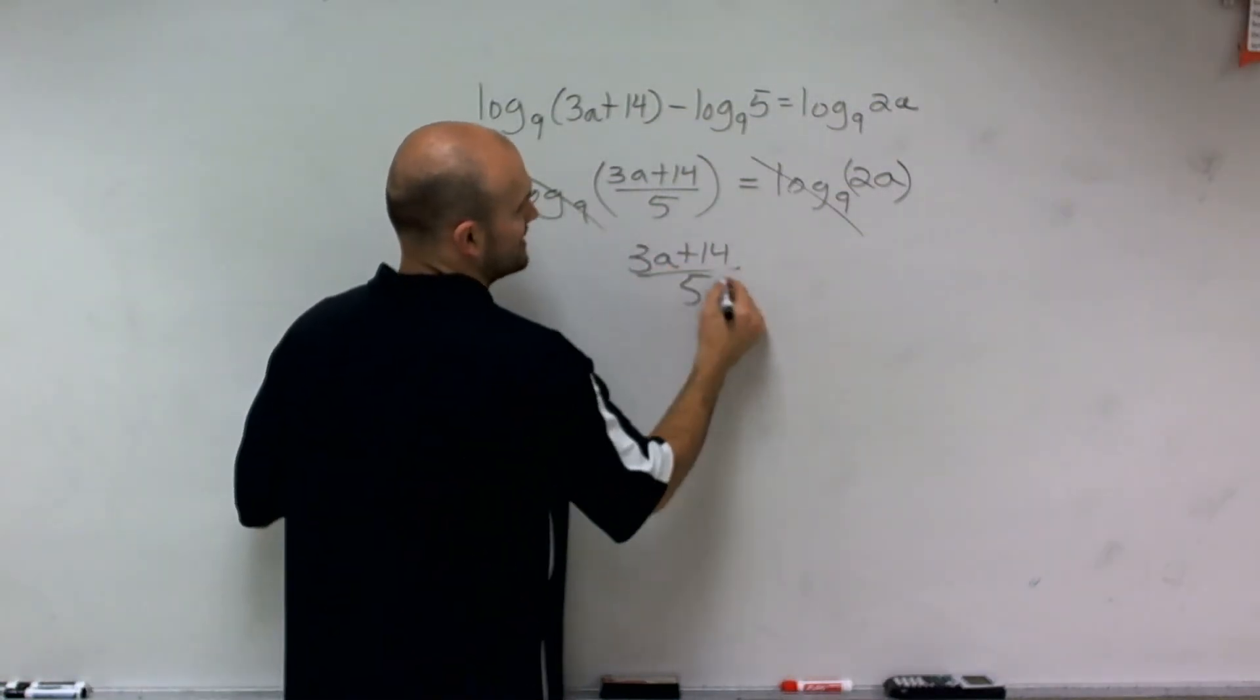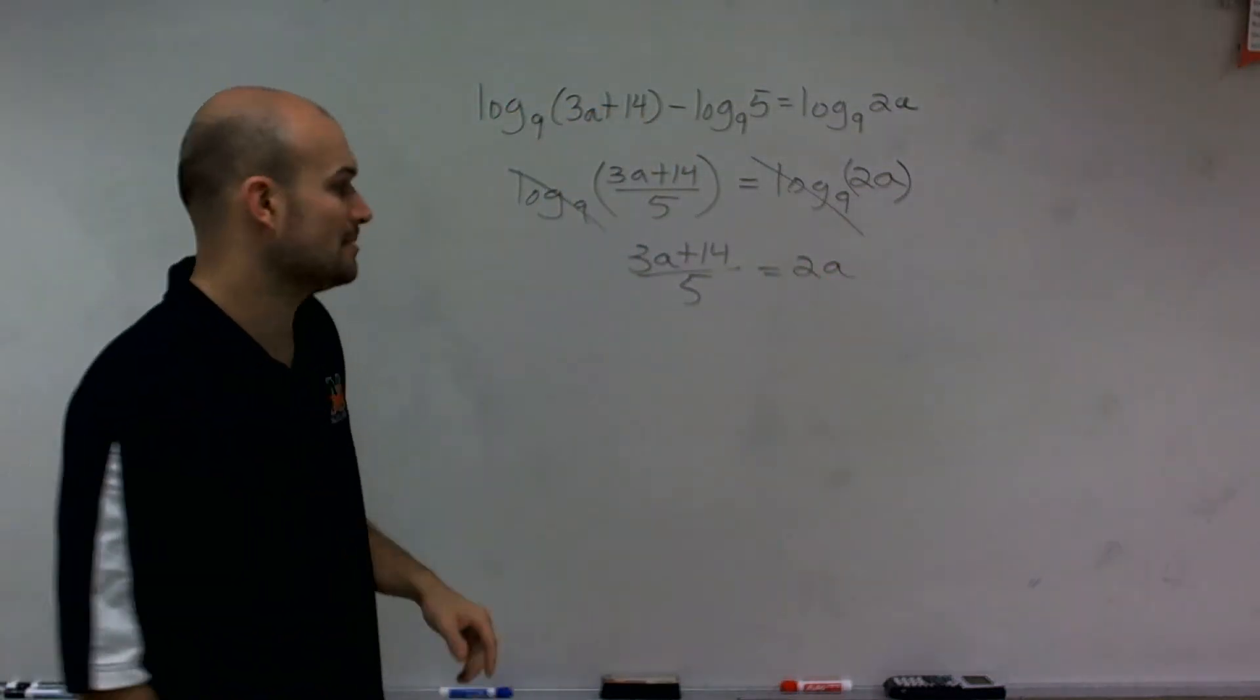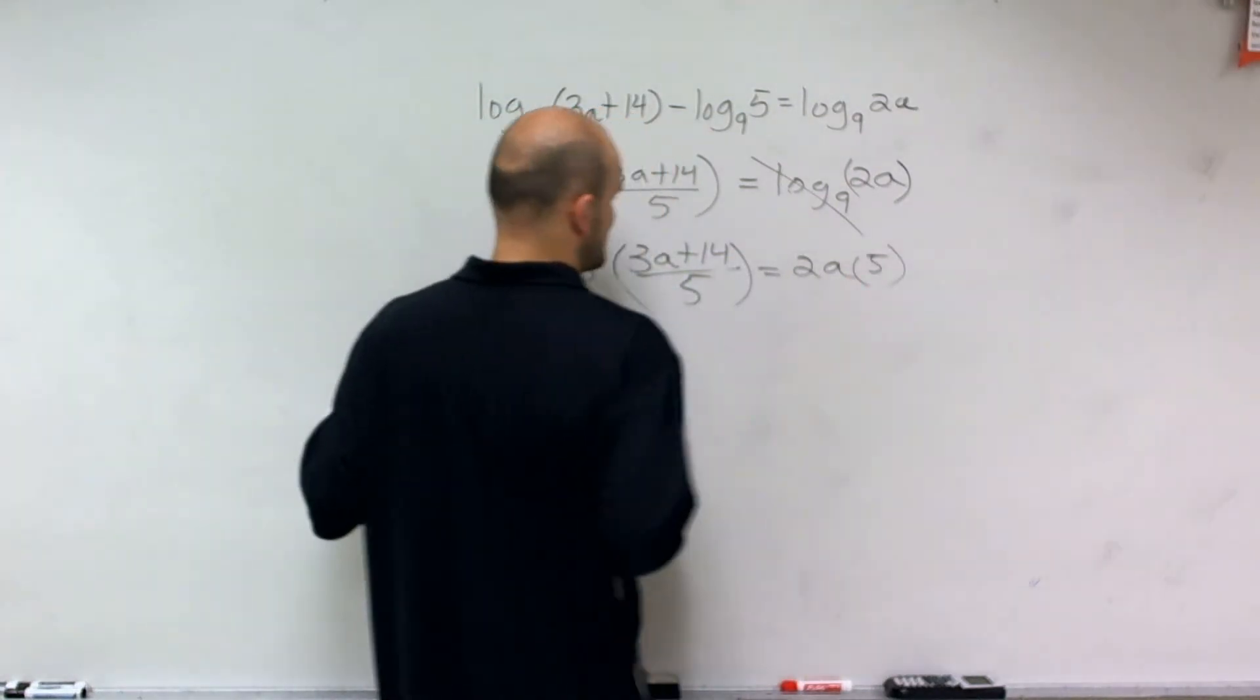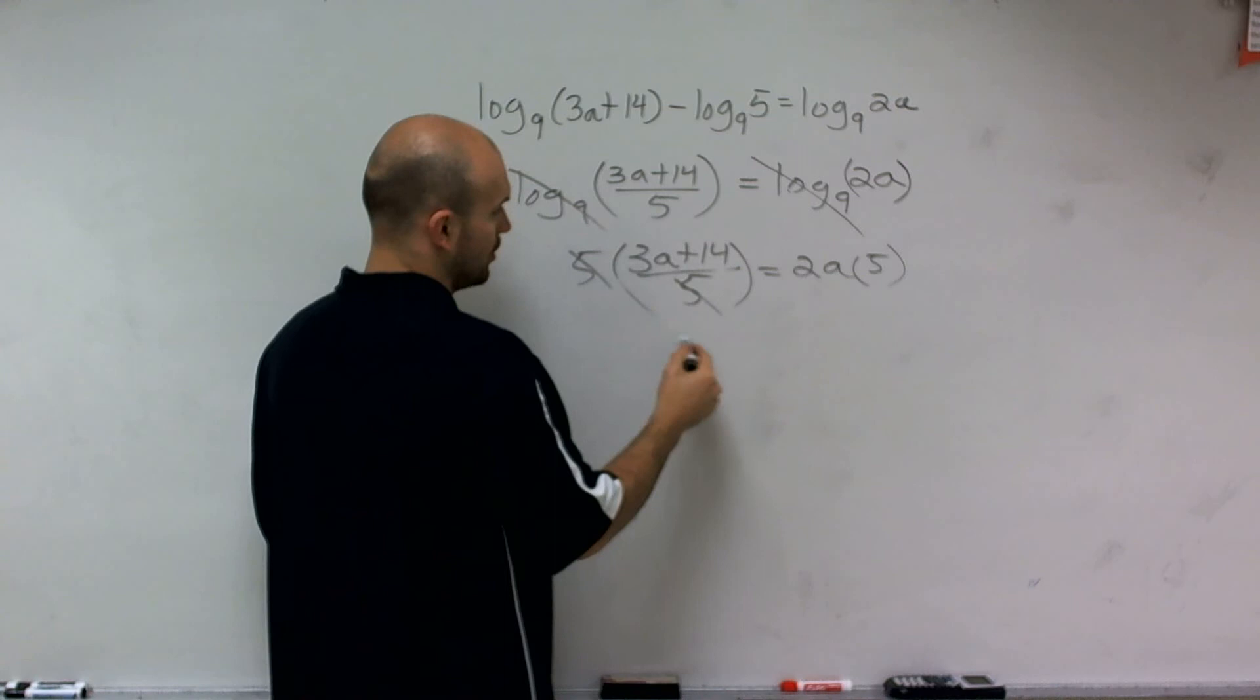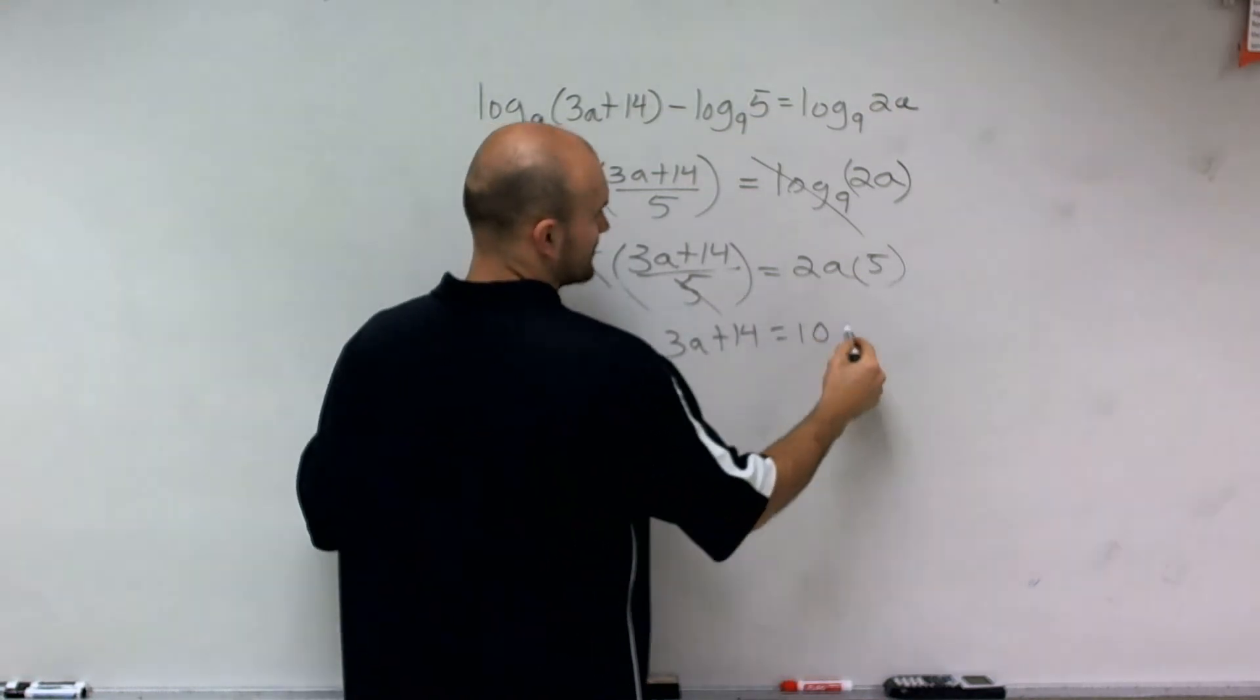3a plus 14 divided by 5 equals now 2a. So to solve a problem like this, I need to make sure I get my 5 off the bottom. So I'll multiply by 5 on both sides. That divides out to 1. So I'm left with 3a plus 14 equals 10a.